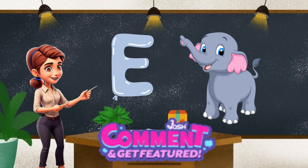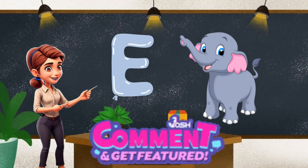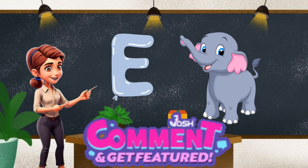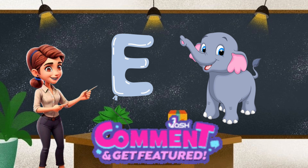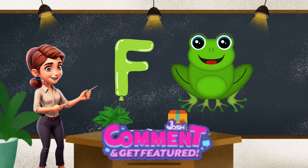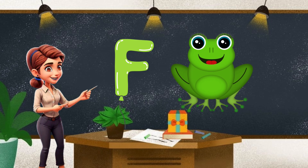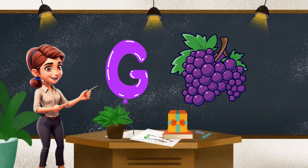E for elephant, that is grey. F for frog, green. G. G for grapes, purple.